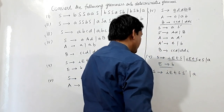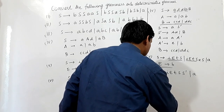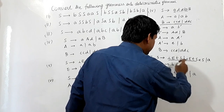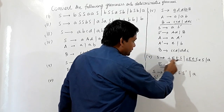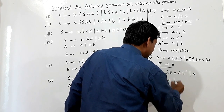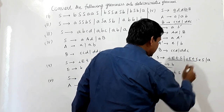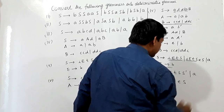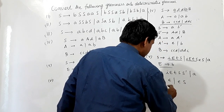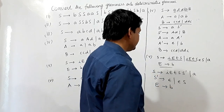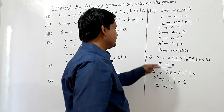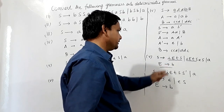For S-dash, this production gives epsilon because the whole prefix is common, and for this production I will write ES. E is producing B as it is because nothing has to be done here. So this is the deterministic grammar corresponding to this grammar.